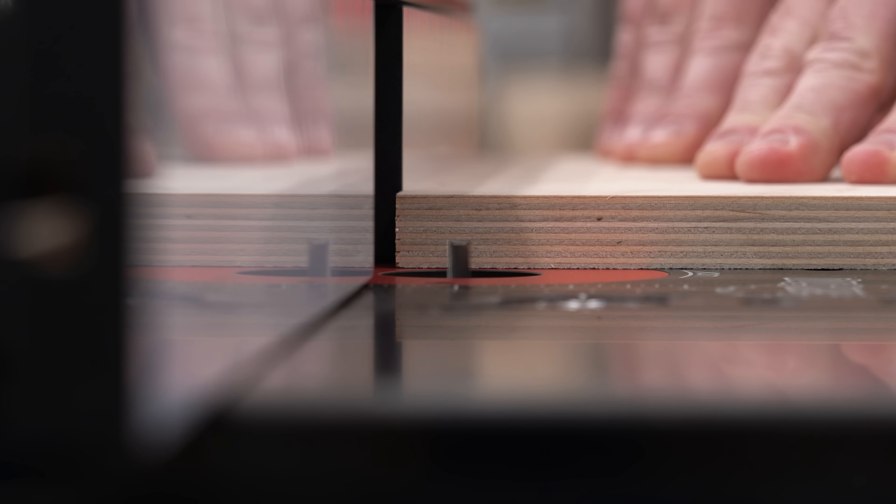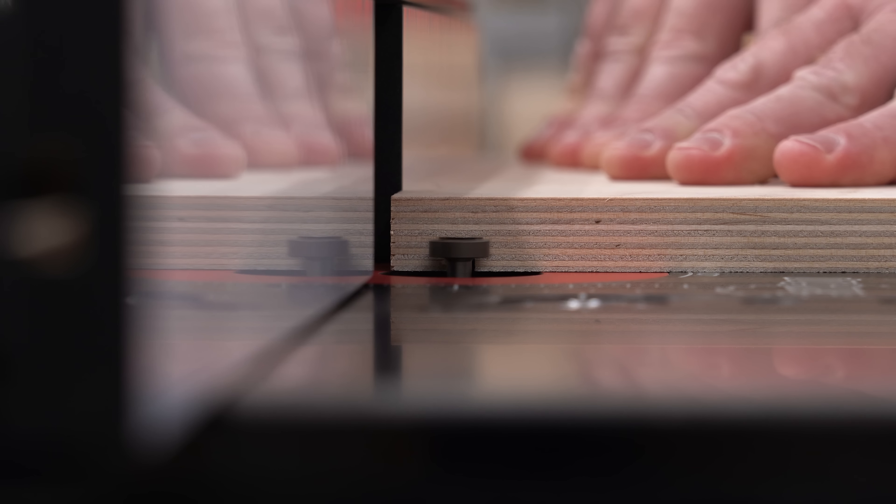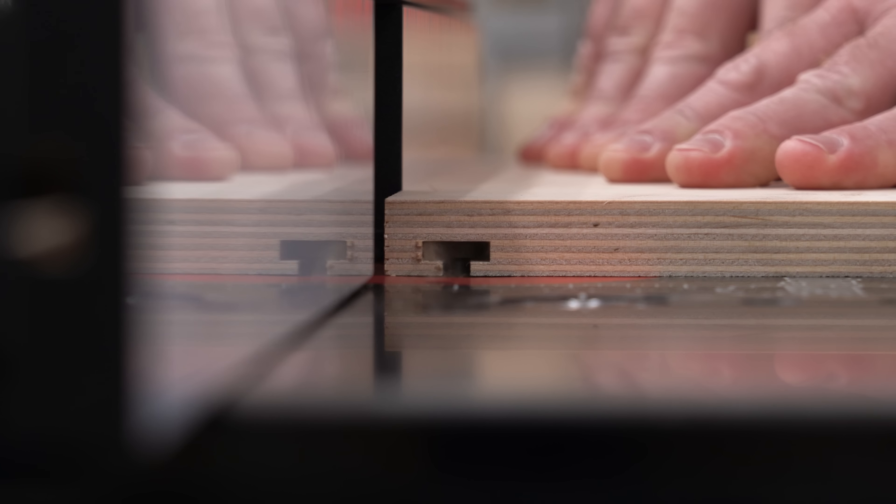For around $45, you can buy these two router bits and run hundreds, maybe thousands of feet of wooden track. And of course you can use these bits for other applications as well.